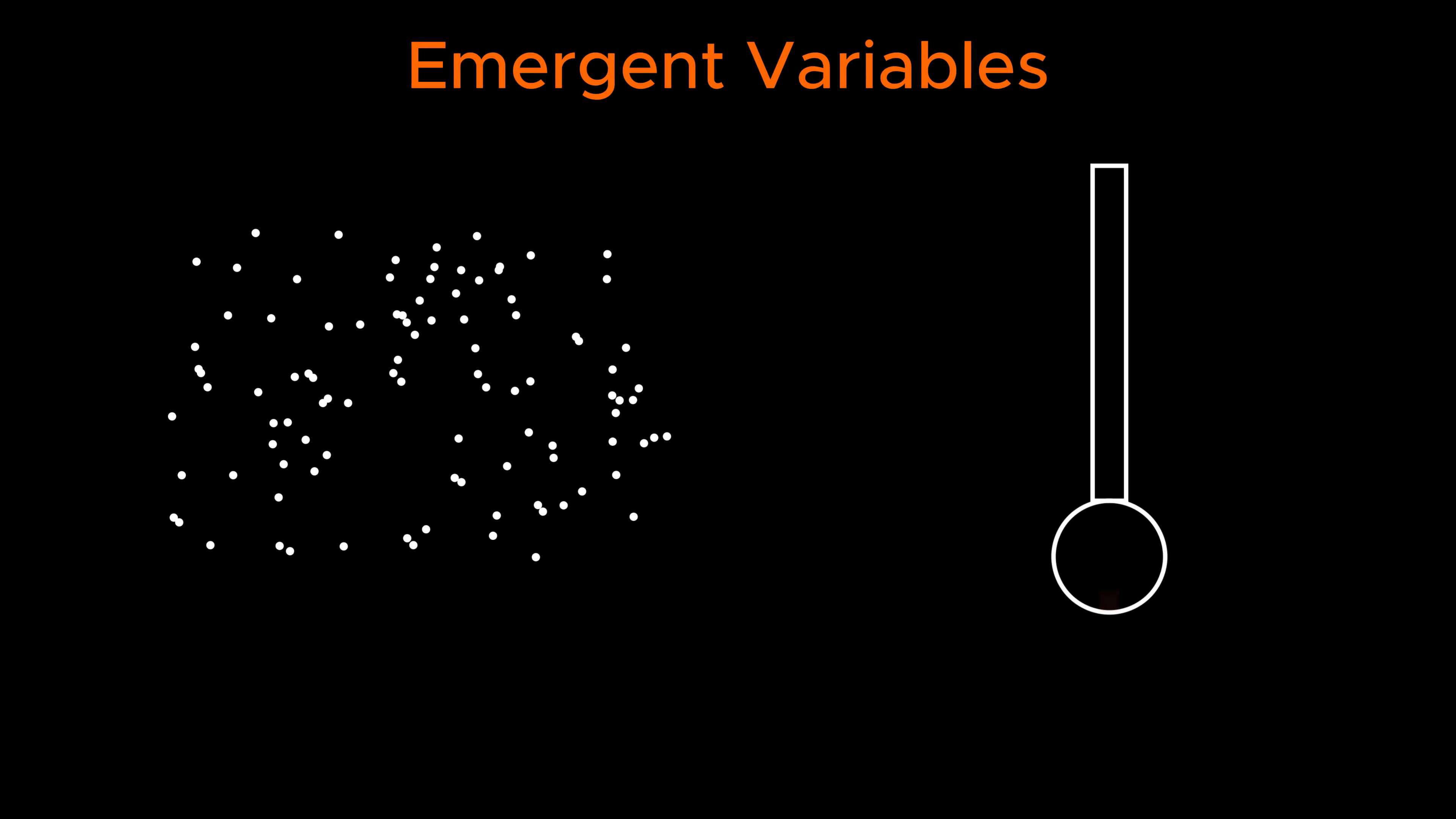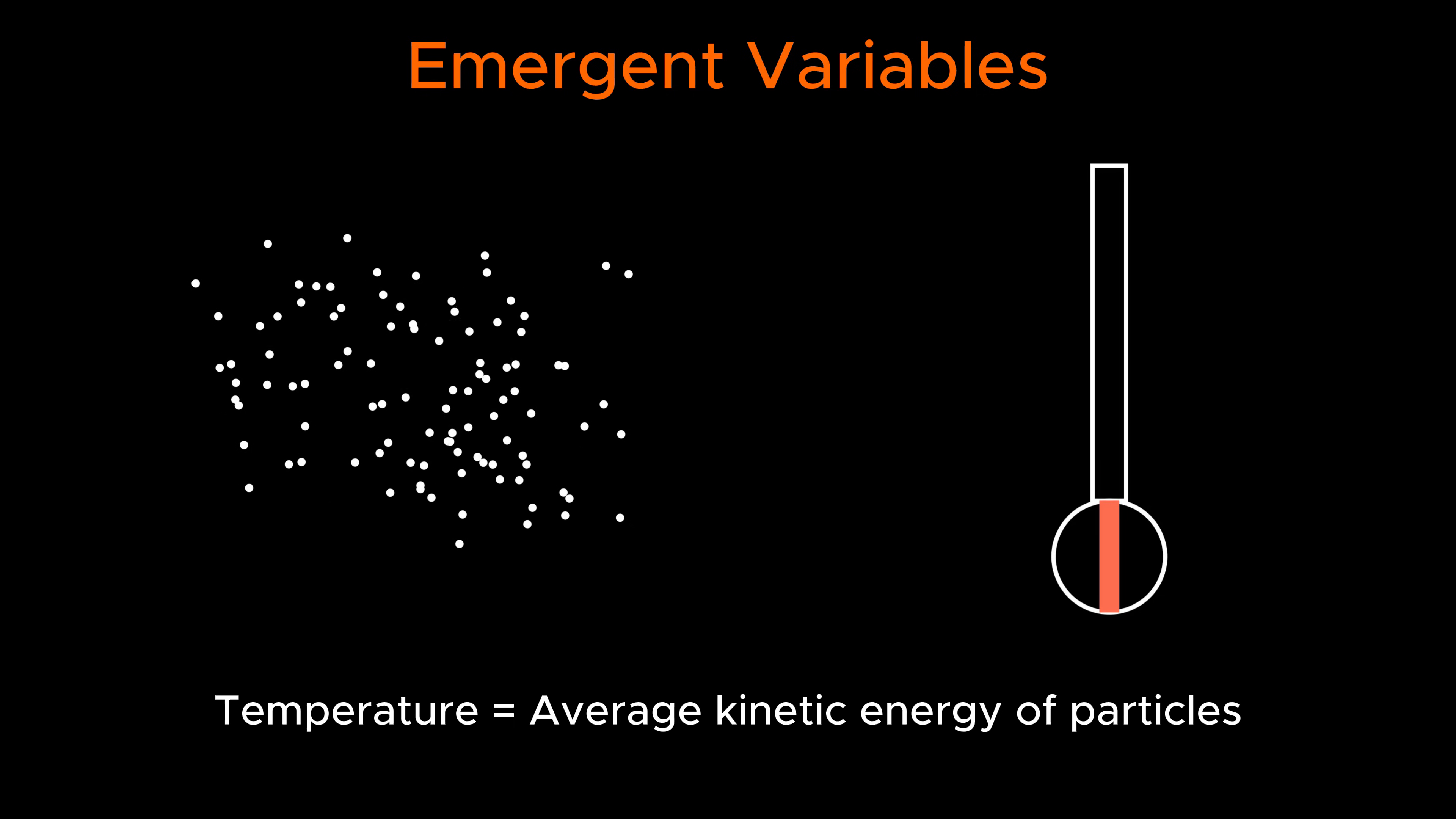Take temperature, for example. It's not a fundamental microscopic property. It's an emergent one. At the atomic level, molecules move at different speeds, each carrying a certain amount of kinetic energy. But we don't track every molecule. Instead, we measure the average kinetic energy of molecules in a system. And that's what we call temperature.